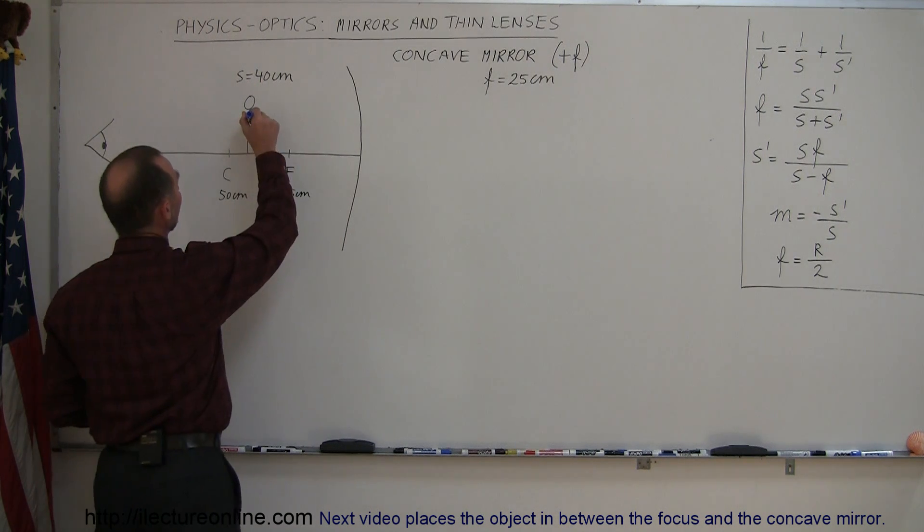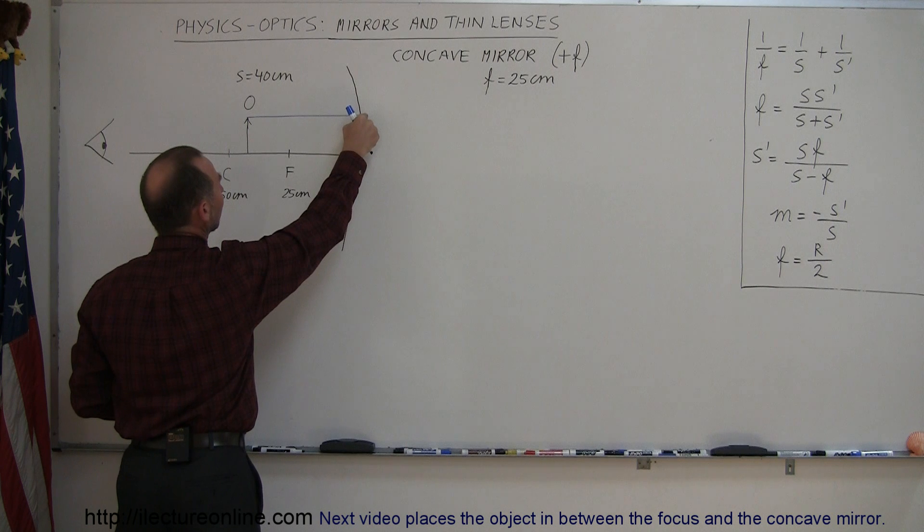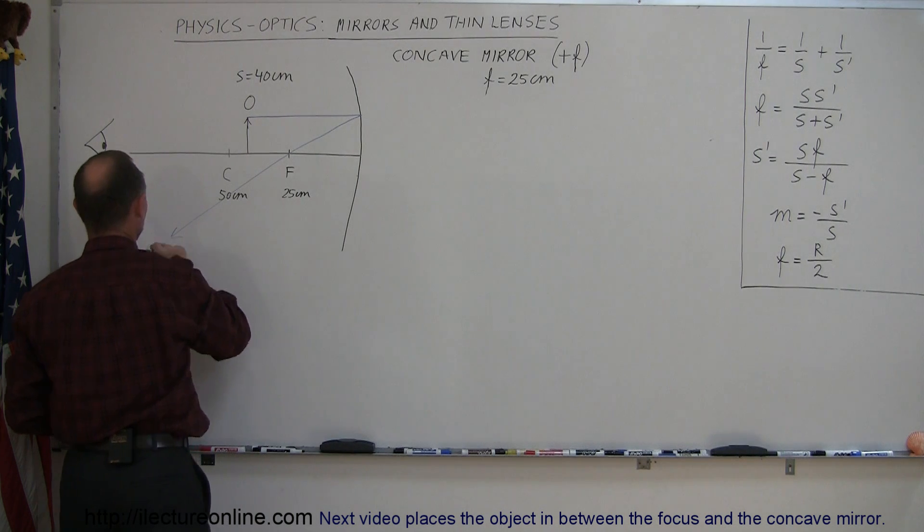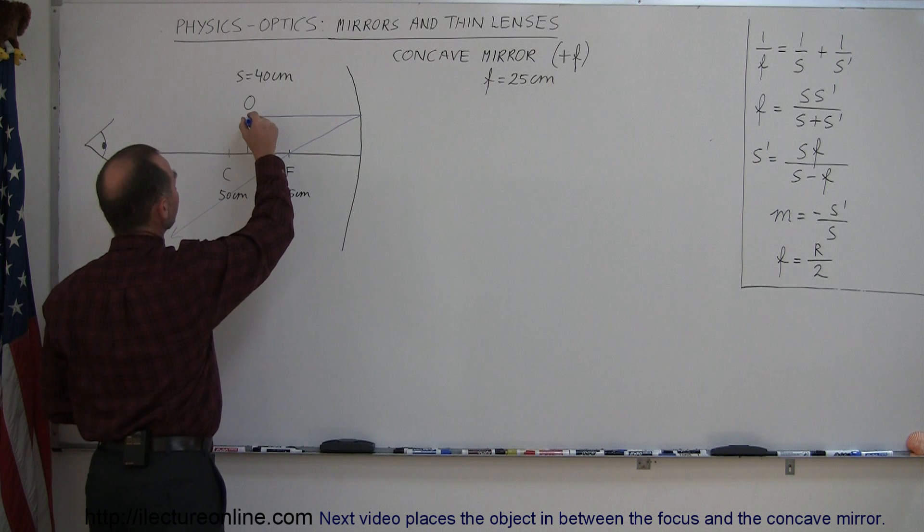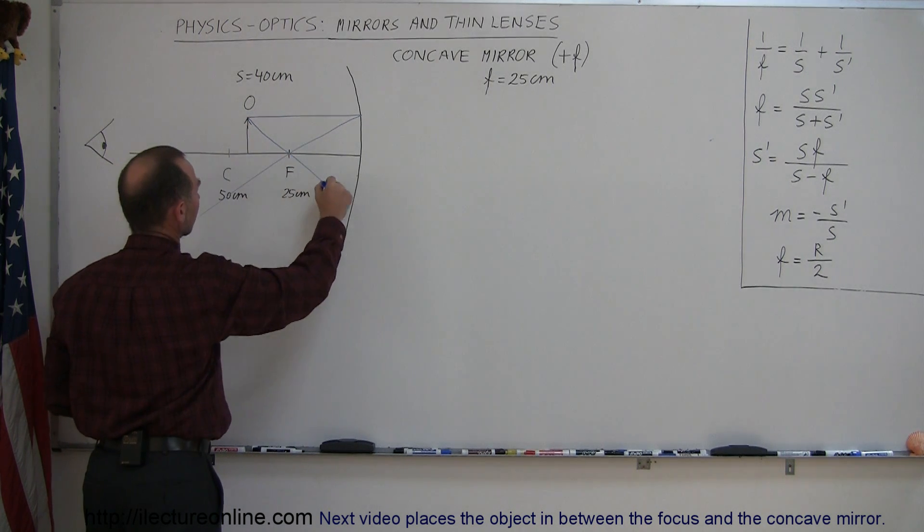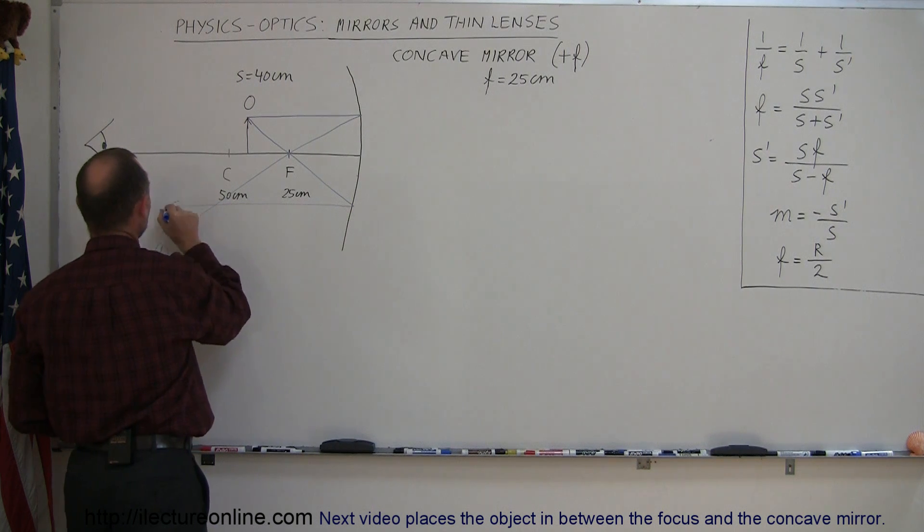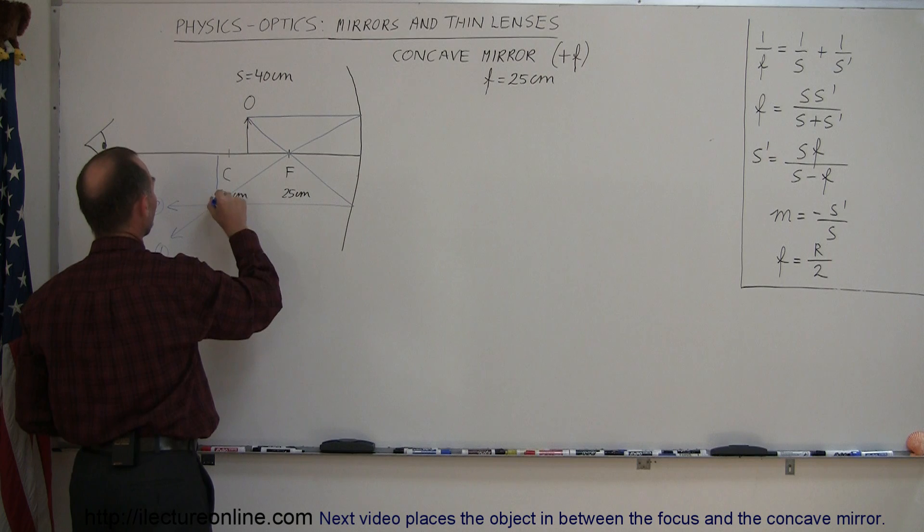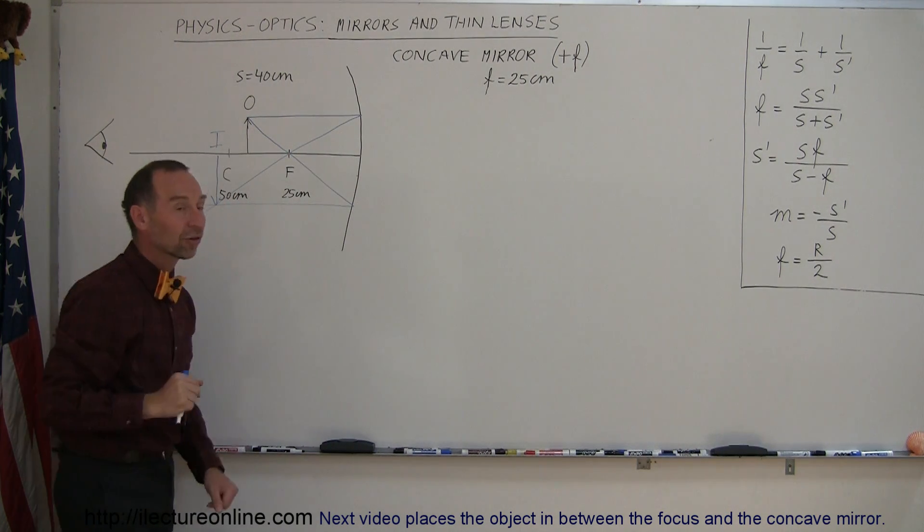First we do it graphically. Again, we draw a ray parallel to the normal. When it hits the mirror, it comes back and reflects through the focal point. That's our first ray. The second ray is drawn from the top of the object to the focal point to the mirror, and then it reflects out of the mirror and comes back over this way. That's our second ray. Where the two rays meet, that will be the location of the image, so the image is over here. It looks like it's farther away than the center of curvature.